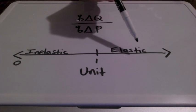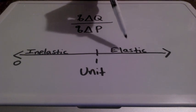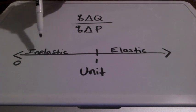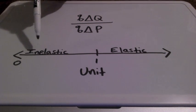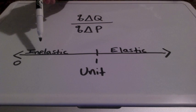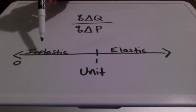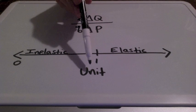For elastic demand, a percent change in price results in a larger percent change in quantity. For inelastic demand, the coefficient is going to be less than 1 — a percent change in price results in a smaller percent change in quantity. For unit elasticity, we are going to have a coefficient of 1.